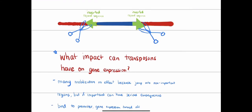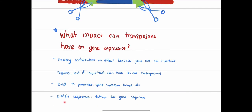Another possibility is that the transposon jumps onto the promoter sequence — the sequence that initiates transcription and tells enzymes where to start. If the promoter is disrupted by the transposon, gene expression is turned off. Alternatively, if the transposon integrates into a coding strand that gets transcribed and translated, the transposon sequence will be in the middle of the message, disrupting protein sequences. This is a serious consequence when it occurs.